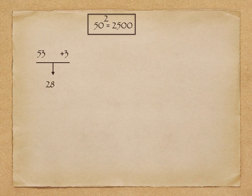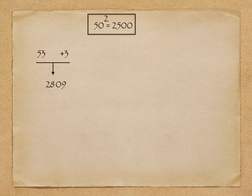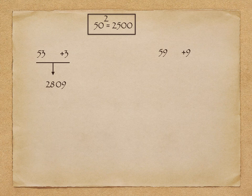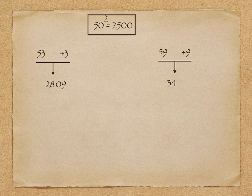One more number, 59. 59 is 9 more than 50. Now add this 9 to 25, so it will be 34, and the square of 9 is 81, so 3481 is the answer.